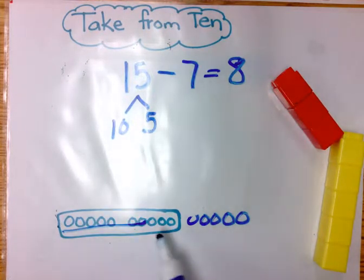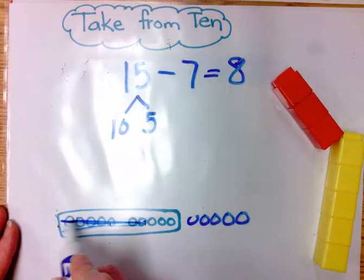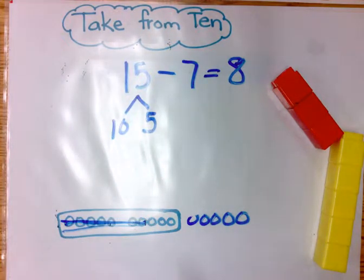It also is a nice way for students to see if they made any mistakes like I just did. Because the fact of 10 minus 7 is one that students know well. Or 10 minus 8 or 10 minus 9. So they can look at their work and quickly see if they made a mistake like I did.